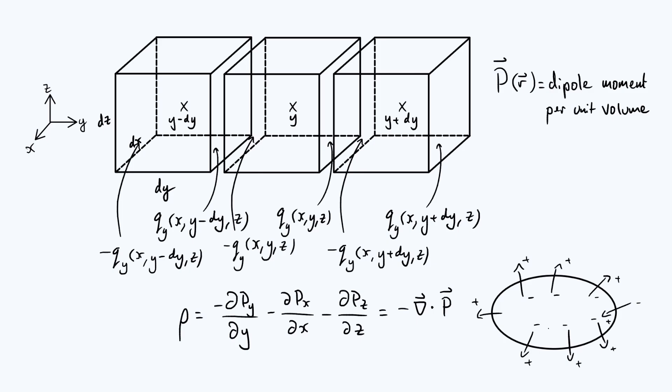So even without having gone through that whole derivation, we would have expected purely on physical grounds that if the divergence of P were positive, then we should be left with a negative charge density within that particular volume. This is consistent with what we've got here because of that minus sign in front of the divergence, so it does make quite a lot of physical sense.